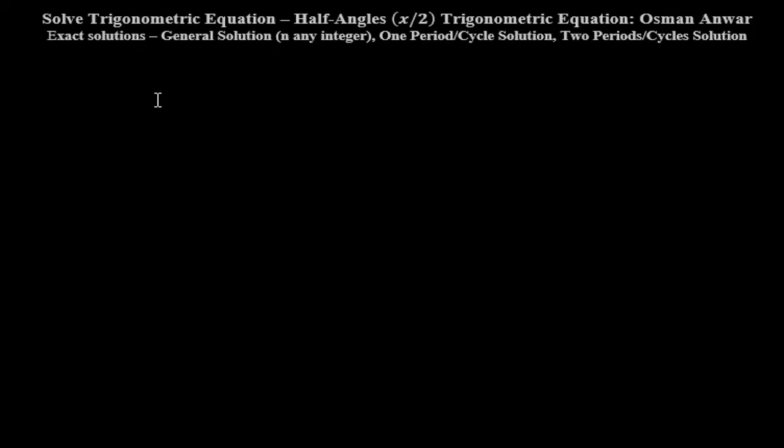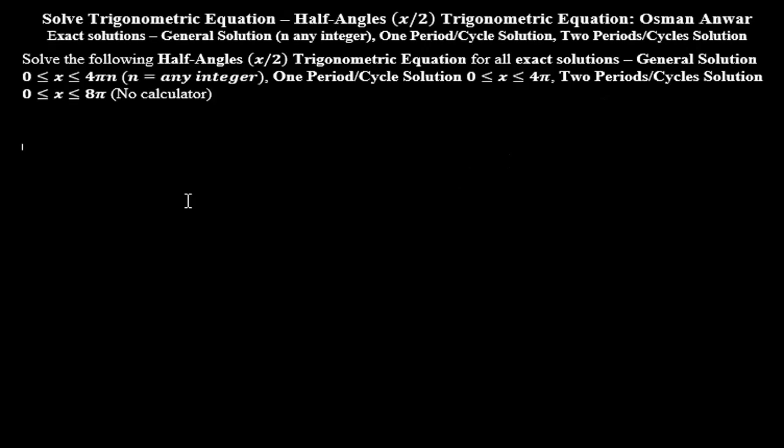We'll solve this half-angle trigonometric equation. We'll find the exact solution, the general solution where n is any integer, the one period cycle solution, and the two period cycle solution. Solve the following half-angle trigonometric equation for all exact solutions, the general solution where x is between 0 and 4π·n where n is any integer, the one period cycle solution where x is between 0 and 4π, and the two period cycle solution where x is between 0 and 8π, and no calculator.